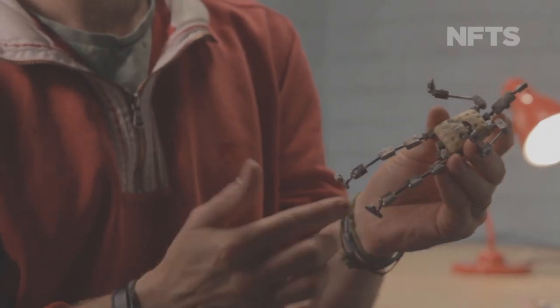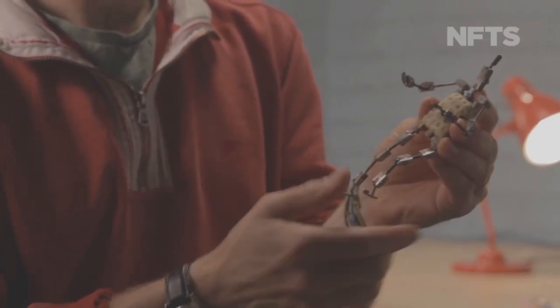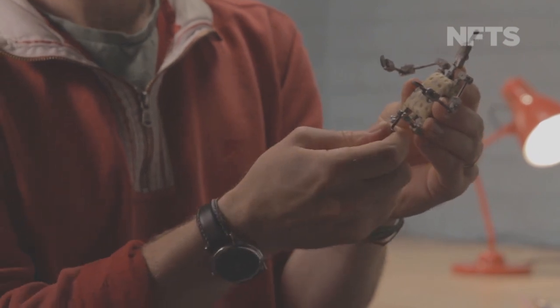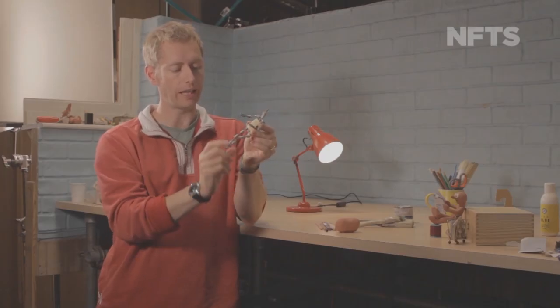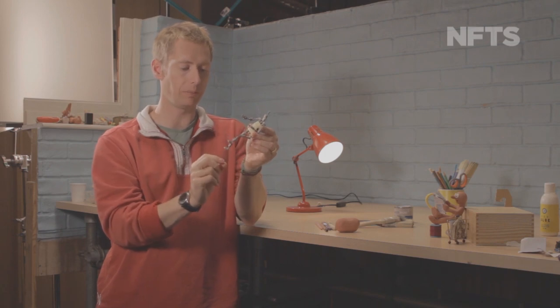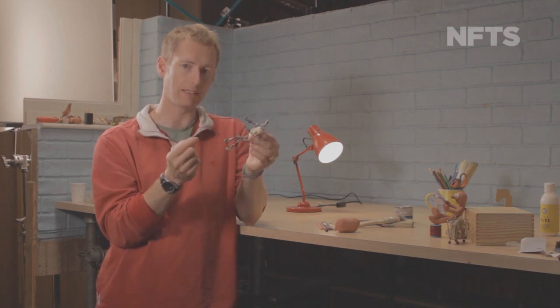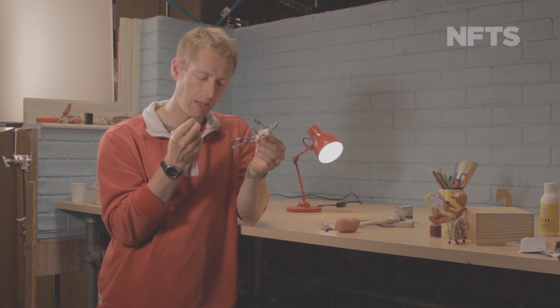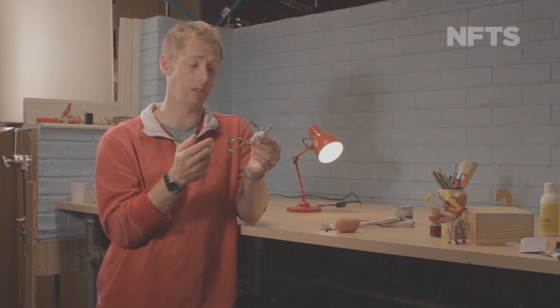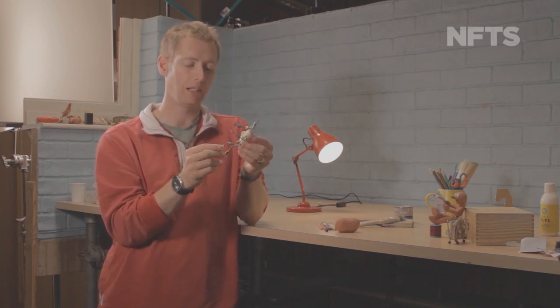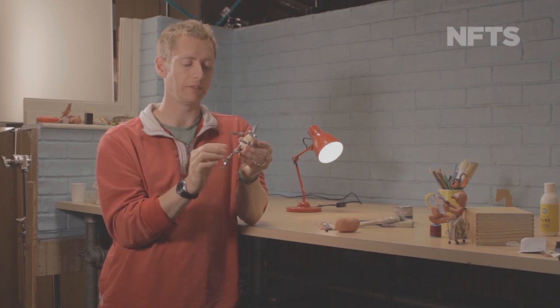And an armature is one of these things and this is a skeleton and what it does is it allows the character to stay in a very precise position and it allows the animator to have immense control over the position of each limb and aspect of a character.